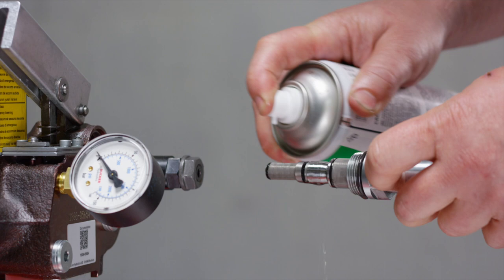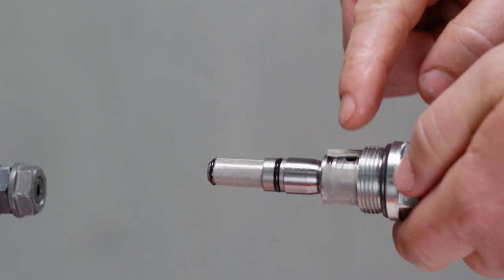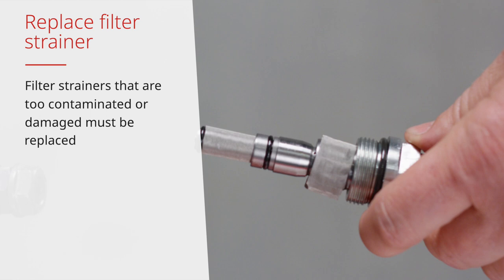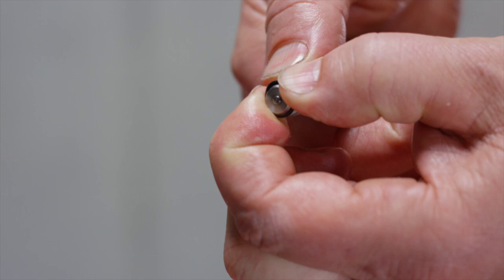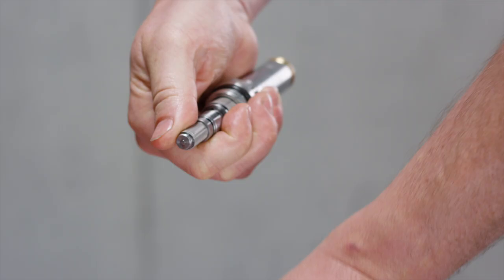Filter strainers that are too contaminated or damaged must be replaced under all circumstances. Pinch the O-ring between the tips of forefinger and thumb and push them to the side. Push the O-ring off the pilot valve with the thumb of the other hand. Pull the filter strainer off the pilot valve.